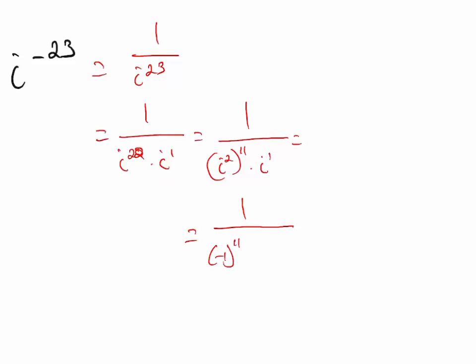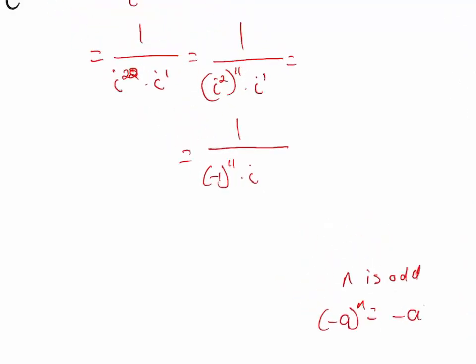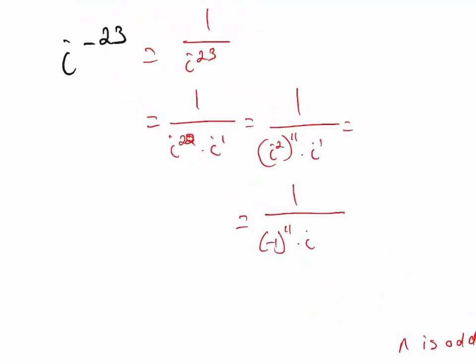We know that if the exponent is odd, negative 1 raised to that odd exponent is just negative 1. So negative 1 to the 11th power is simply negative 1.